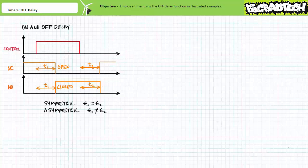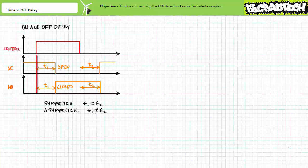Compare this behavior to a timer executing the on-and-off-delay function. As the name implies, it executes a combination of the on-delay and off-delay function. When the controlling input is energized, the contacts do not immediately switch states. Only after the predetermined delay period T elapses do the contacts change states — the normally closed contact opens and the normally open contact closes. This is the on-delay portion of the on-and-off-delay function.